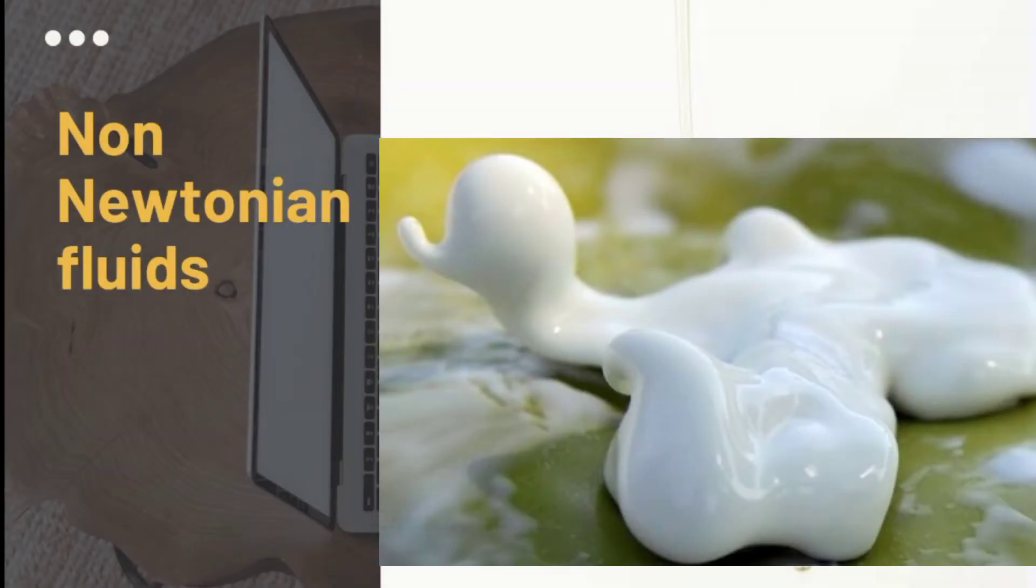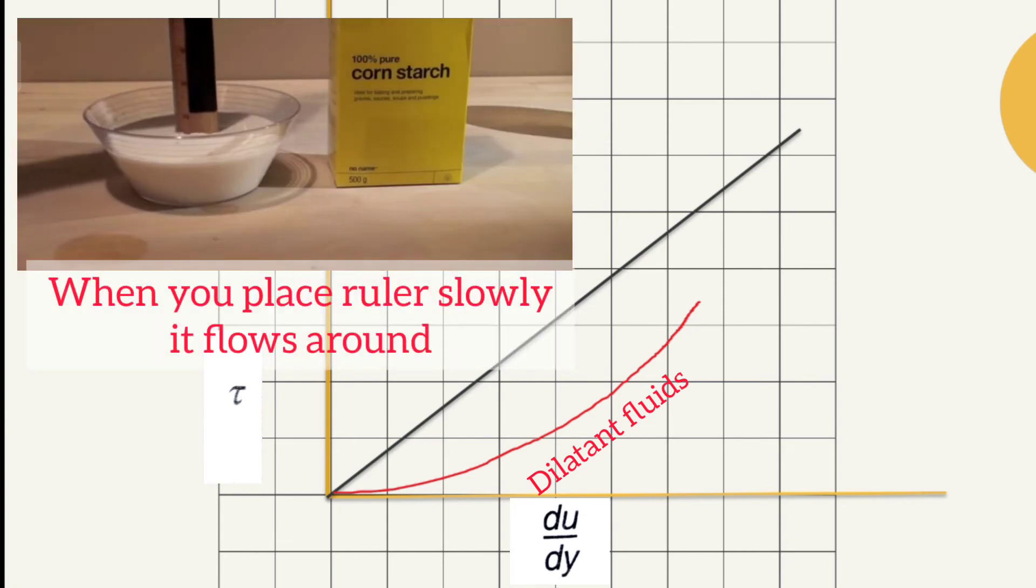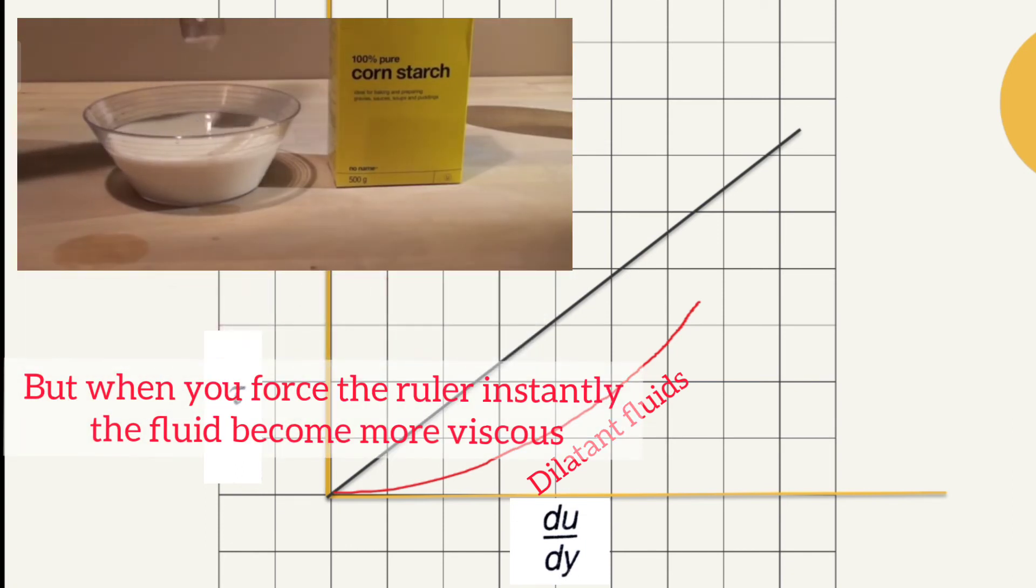Let's move to non-Newtonian fluids. All fluids which do not obey Newton's law of viscosity are known as non-Newtonian fluids. For such fluids, the plot of tau vs. gamma is not a straight line passing through the origin. This straight line is for Newtonian fluids. This curve which is concave in shape represents a class of non-Newtonian fluids known as dilatant fluids. Fluids such as solution of corn flour, sugar, and starch are some examples of dilatant fluids.